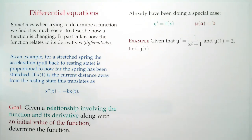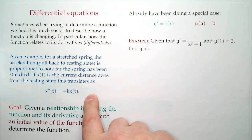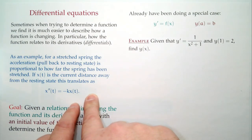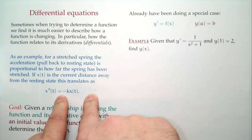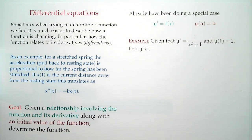What you have is an equation that involves both the function and the derivative of the function. There's an example mentioned here which is called Hooke's Law — well, it's not quite Hooke's Law but it's related to Hooke's Law.